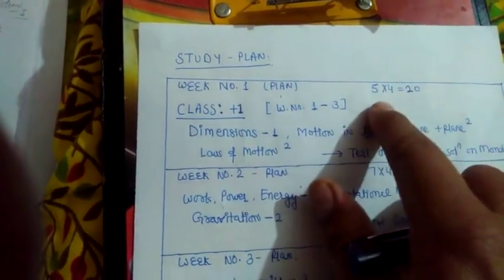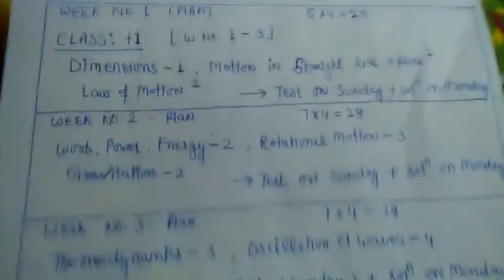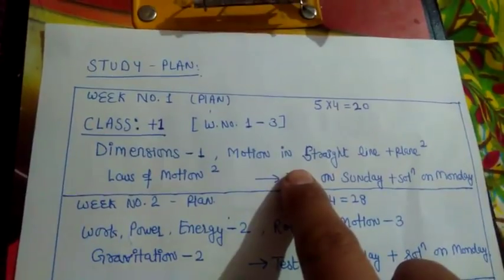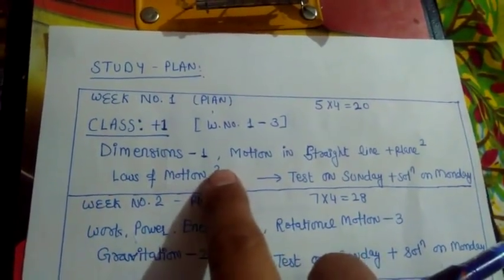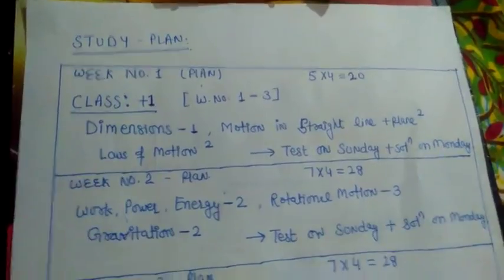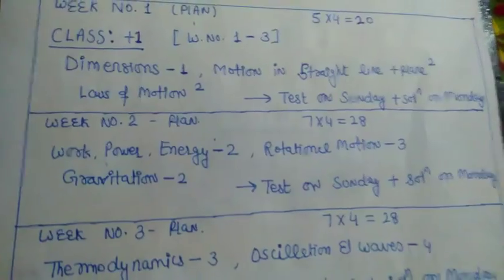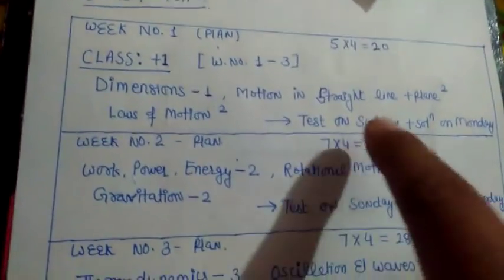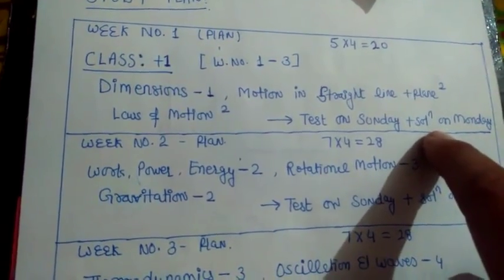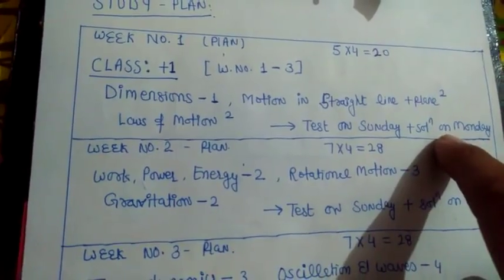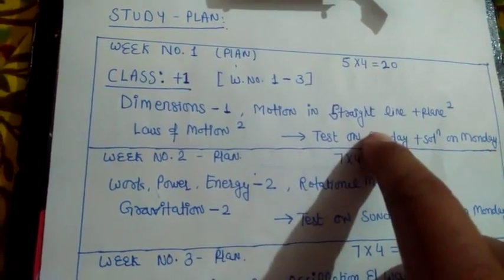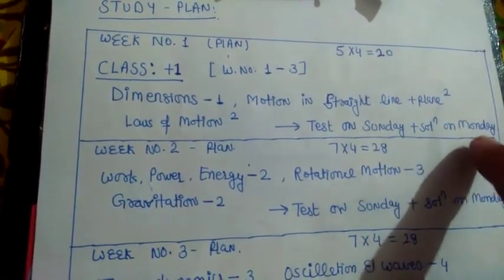From here we get five questions — five into four means 20 marks. At the end of the week, on Sunday, I will upload the test paper — the first test series regarding Dimensions, Motion in a Straight Line and Plane, and Laws of Motion. On Monday, I will upload the detailed solutions of those questions. I will upload the test series on Sunday, and I will upload the answer key on Monday so you can check your preparation and see what score you can get.